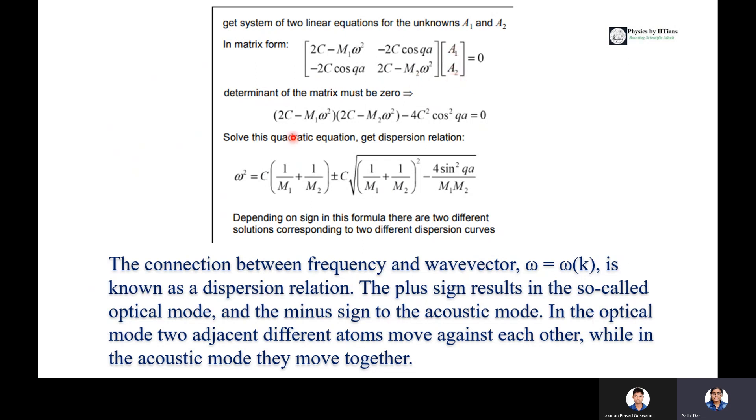We can write this in a matrix form, and the determinant of this matrix should be 0 because amplitudes A1 and A2 cannot be 0. They are finite quantities. If you solve this quadratic equation, you will get the dispersion relation: ω² = C(1/M1 + 1/M2) ± C√[(1/M1 + 1/M2)² - 4sin²(QA)/M1M2].